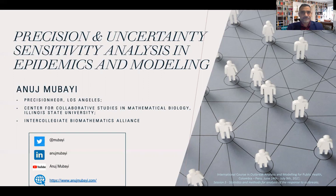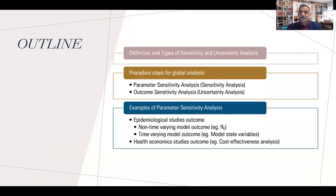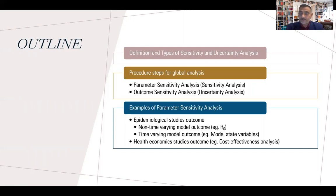Today my lecture is on defining what sensitivity and uncertainty analysis are, what types of methods exist, and what procedures one should follow. I will be talking mostly about global analysis rather than local analysis, focusing on two types: parameter sensitivity analysis and outcome sensitivity analysis. Parameter sensitivity analysis is usually referred to in the literature simply as sensitivity analysis, whereas outcome sensitivity analysis is referred to as uncertainty analysis.